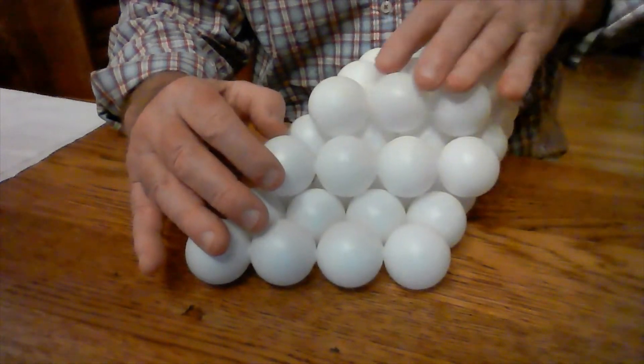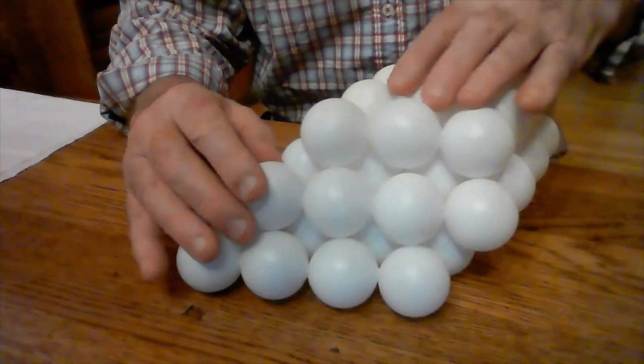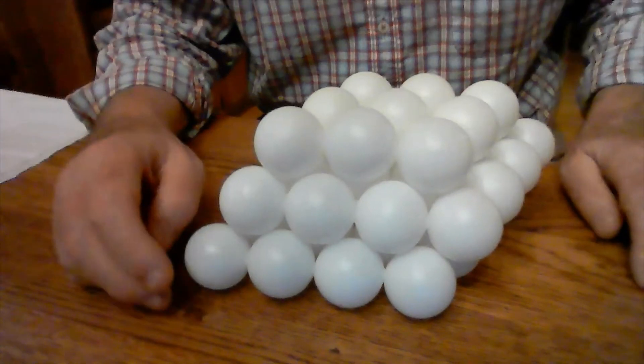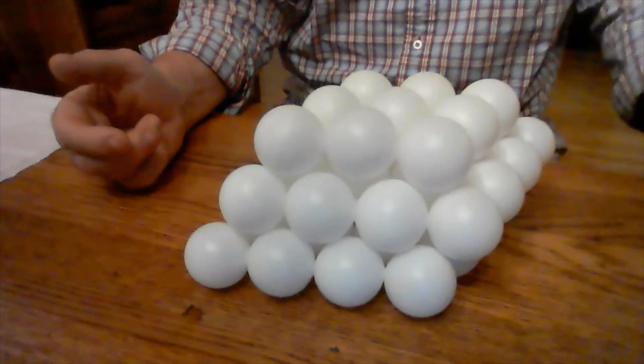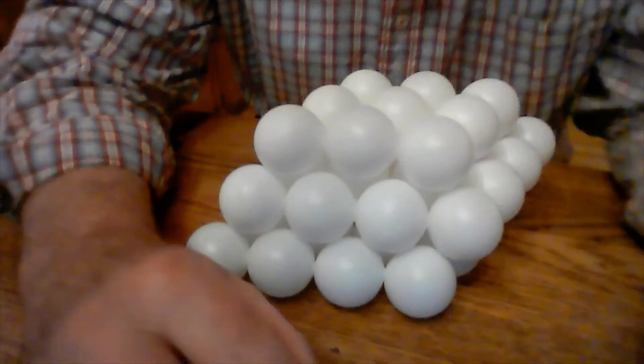So basically, all twinning requires is that you need successive planes to have partials all in the same direction that are unimpeded by further shear.